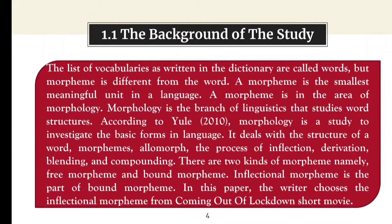A morpheme is in the area of morphology. Morphology is the branch of linguistics that studies word structures. According to Yule, morphology is a study to investigate the basic forms in language. It deals with morphemes, the structure of a word, morphemes, allomorphs, the process of inflection, derivation, blending, and compounding. There are two kinds of morpheme, namely free morpheme and bound morpheme.